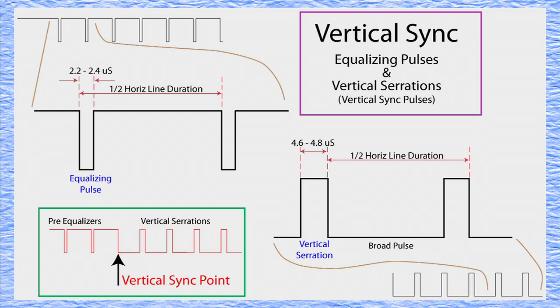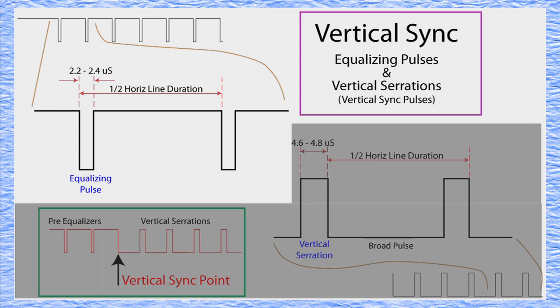Here are the specifications for the vertical sync pulses. First, the equalizing pulses are 2.2 to 2.4 microseconds across, and are spaced at half-horizontal duration intervals. Pre- and post-equalizing pulses are exactly the same in duration and interval.